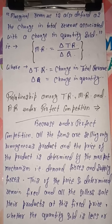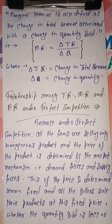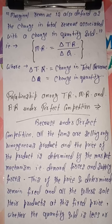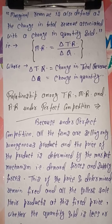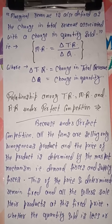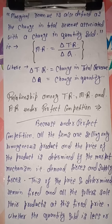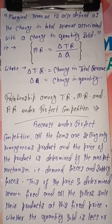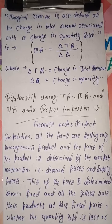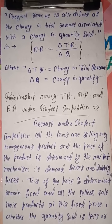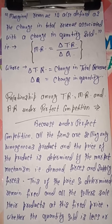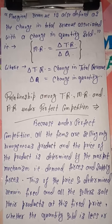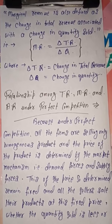Marginal revenue can also be defined in another way. Marginal revenue is also defined as the change in total revenue associated with a change in quantity sold. When we change the quantity sold, the ratio of the resulting change in total revenue is known as marginal revenue. The formula is: MR = ΔTR / ΔQ, where ΔTR equals change in total revenue and ΔQ equals change in quantity sold.